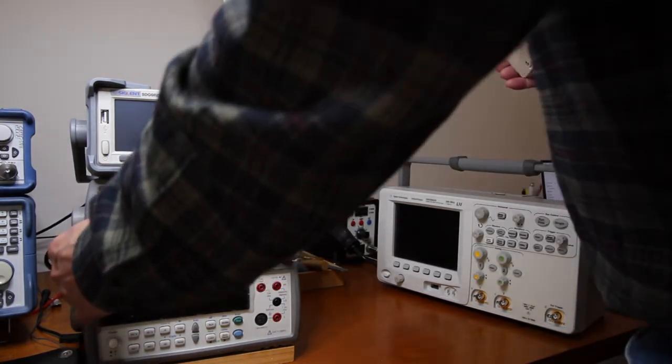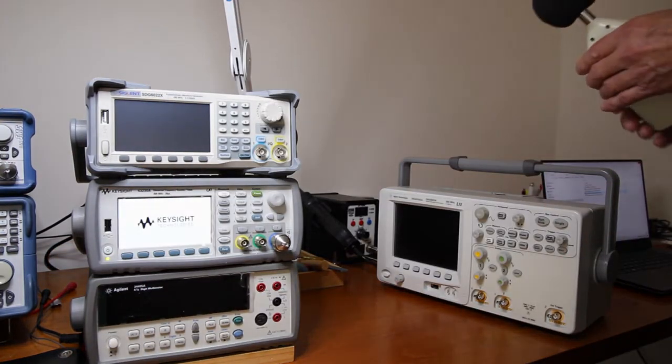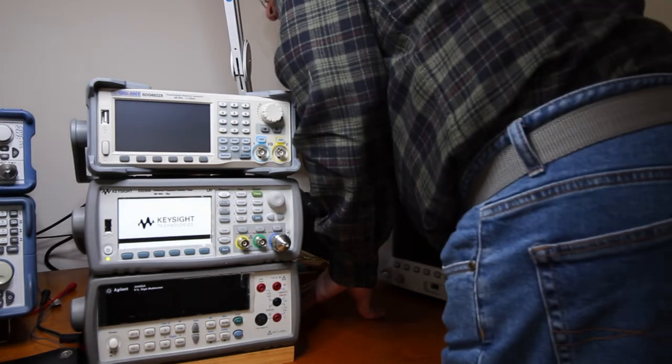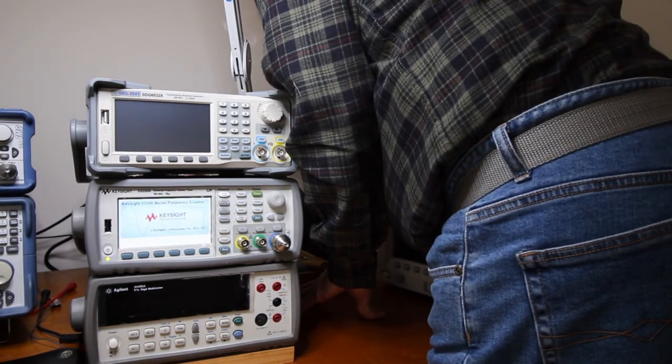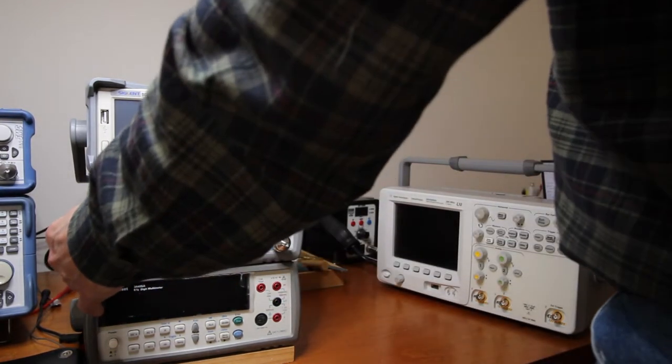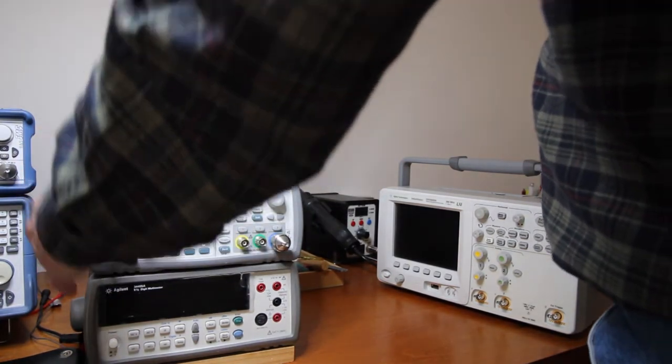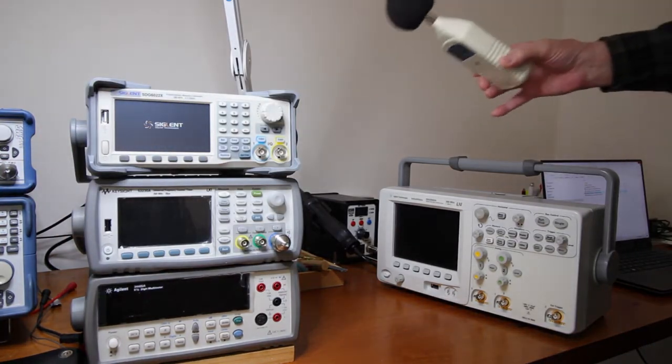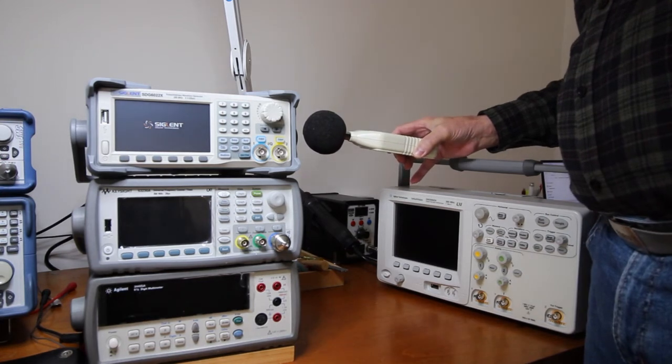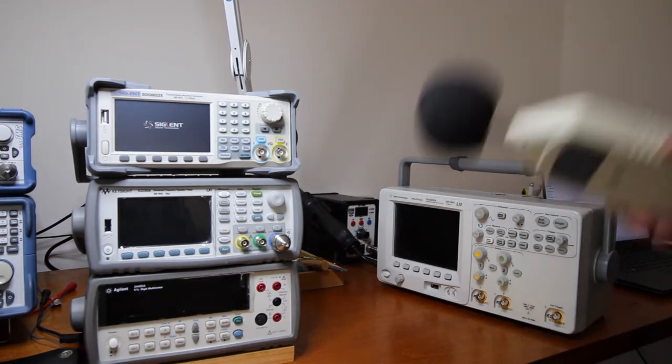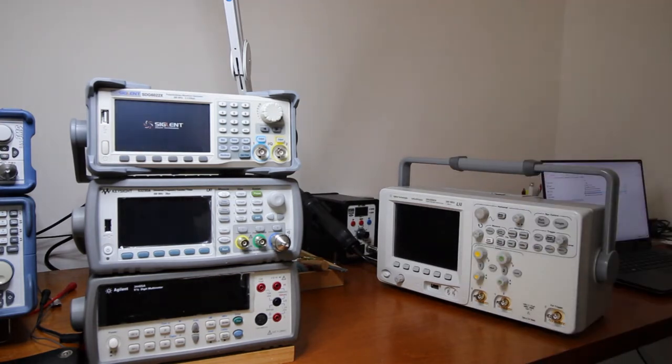Now this other one here, it's a frequency counter. 57 dB. And now the signal generator. 55 dB, so the signal generator we can say it's a quiet instrument.